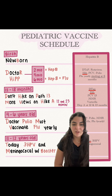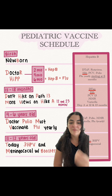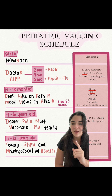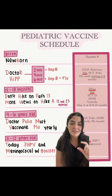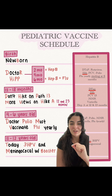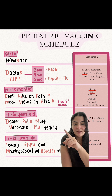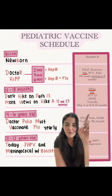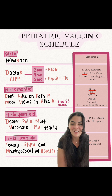Now let's look at 12 to 18 months. The way to think about this: you've been raising your child up to 1 year old and you finally want to go on a vacation. You decide to go hiking, and somebody tells you don't hike on path 13 — more views on hike A, 12, and 23. That refers to hepatitis A, given specifically at 12 and 23 months. Note: there's a typo to fix — it's hep A at 12 and 23 months, not 13.